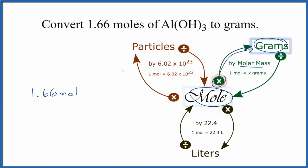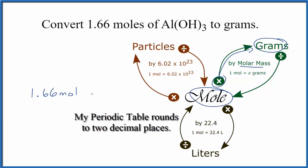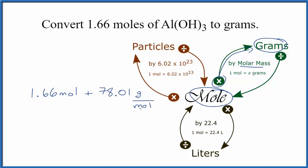The molar mass we find by going to the periodic table and adding up the masses of each element. If you need help finding the molar mass of aluminum hydroxide, there's a link in the description. We find the molar mass and get 78.01 grams per mole.